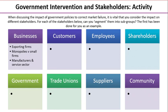Your task is to think about how you might segment those groups into smaller subgroups. We've done the first one as an example: for businesses, instead of just thinking about the impact on business broadly, you could think about the impact on firms that are exporters versus those that serve just the domestic market, or monopolies and large dominant firms versus very small, highly competitive firms in competitive markets.